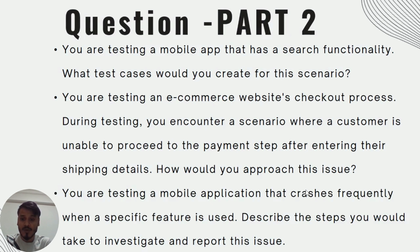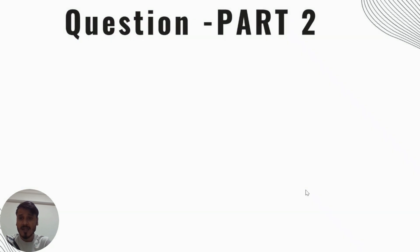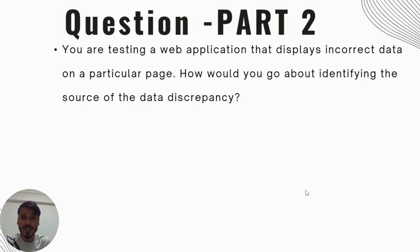Describe the steps you would take to investigate and report this issue. This question helps in analyzing how in-depth your mobile application testing experience is. The last question is: you are testing a web application that displays incorrect data on a particular page — how would you go about identifying the source of the data discrepancy? These are the four questions we are going to cover.